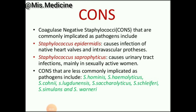CONS are coagulase-negative staphylococcus bacteria. This includes Staphylococcus epidermidis, which causes infection of native heart valves and intravascular prostheses. It also includes Staphylococcus saprophyticus, which causes urinary tract infections mainly in sexually active women. CONS that are less commonly implicated as pathogens include additional species.